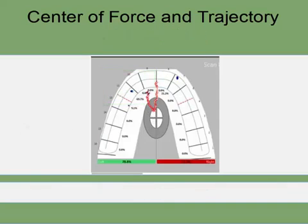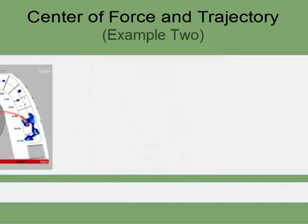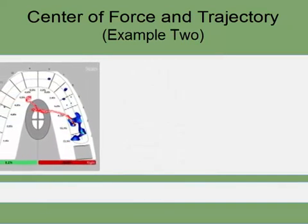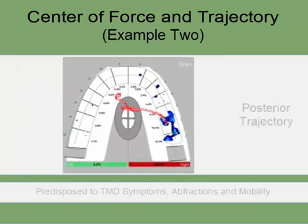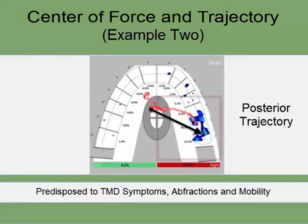The second example shows the trajectory curving downwards towards the posterior right side of the arch. This indicates poor anterior guidance, possibly requiring a steepening of the guidance angle. Patients may be predisposed to TMD symptoms of infractions and mobility in this situation because of the lateral forces from the interfering teeth.